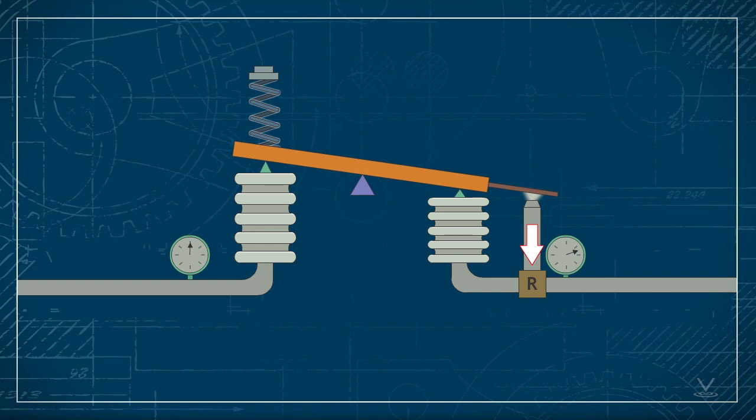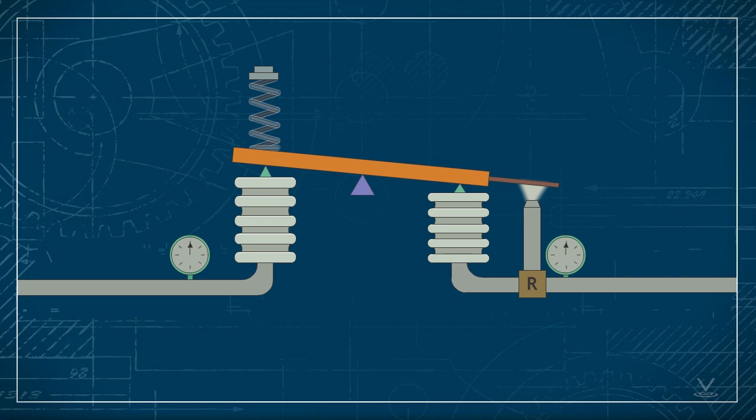The relay converts the change in back pressure to an output that reflects the increase. The increase in output is supplied to the feedback bellows, which expands and brings the controller to a balanced condition that reflects the difference between input and setpoint.